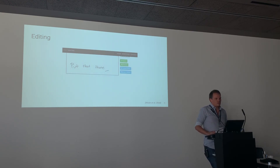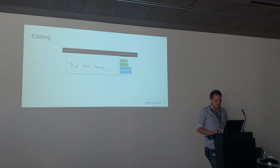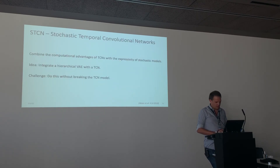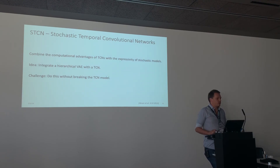To conclude: an obvious follow-up idea if you've worked with stochastic RNNs and heard about temporal convolutional networks is to combine both - you want the computational efficiency and expressivity of WaveNet-like architectures, and the modeling power of variational models.